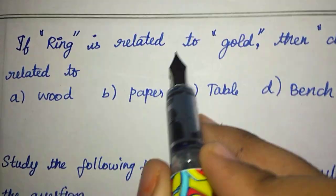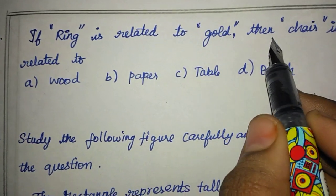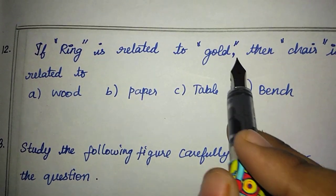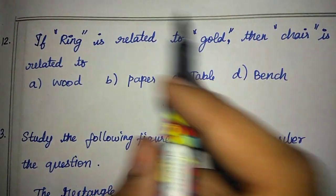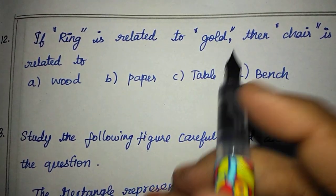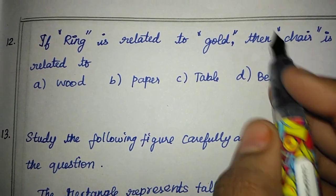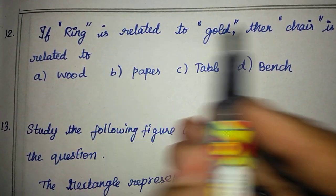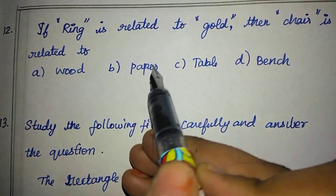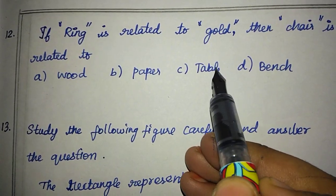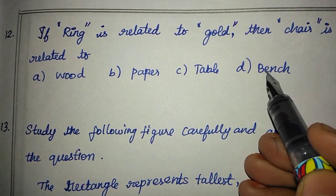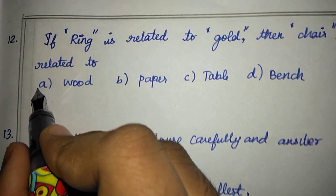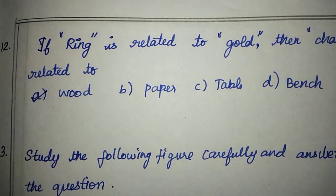If the ring is related to gold, then chair is related to what? There is a ring, so you get gold. We use gold to get gold. And the chair is related to — the chair is related to wood. Table and pencil — you can get paper. So this is related, with option C. This is called the right answer.